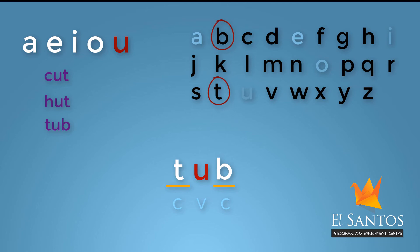Now for our next word, let me replace T with C. It reads as K, U, B — Cub.